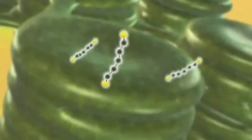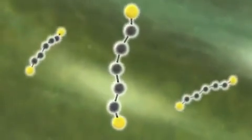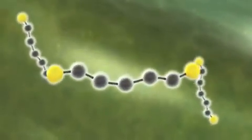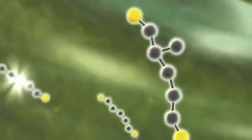The Calvin cycle takes place outside the thylakoids in the stroma, the thick fluid of the chloroplast. At the beginning of the cycle, carbon dioxide molecules combine with molecules called RUBP.